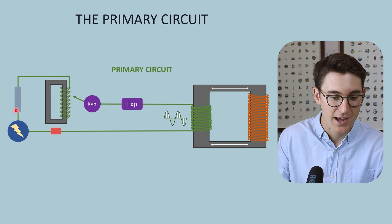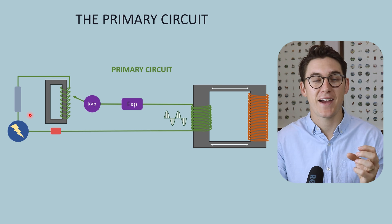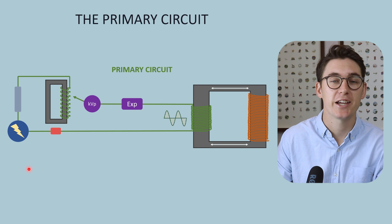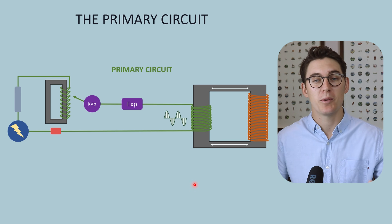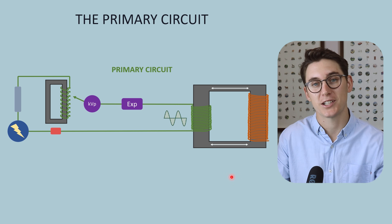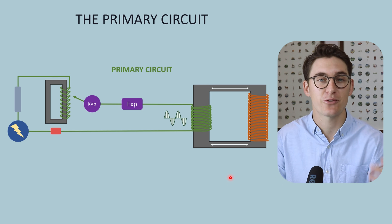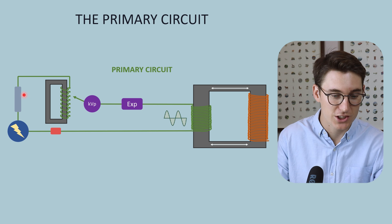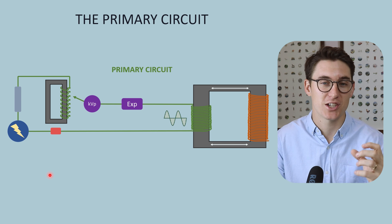The first component is known as the line monitor. The line monitor ensures we are getting 220 volts from the hospital electricity supply. If this voltage were to change, we would be multiplying that altered voltage through the step-up transformer, ultimately exposing our patient to a different x-ray energy than we dialed in. So the line monitor is linked to a line compensator, which compensates to make sure the voltage is what we expect.